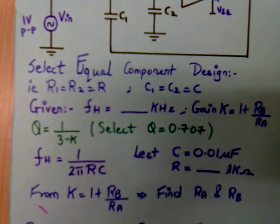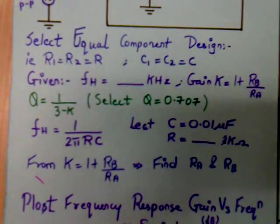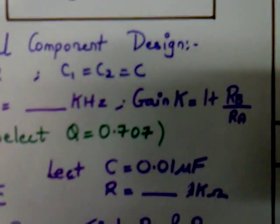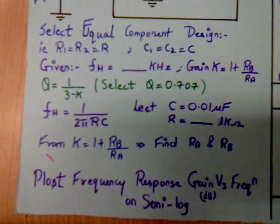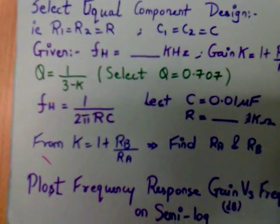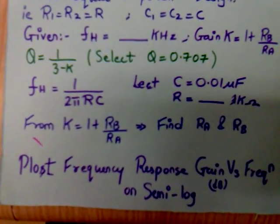Using equal component design and given the cutoff frequency and using the gain formula, we can select a value of RA, RB, R and C from the given formulas.